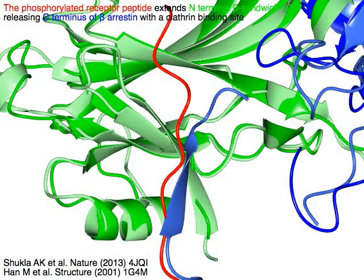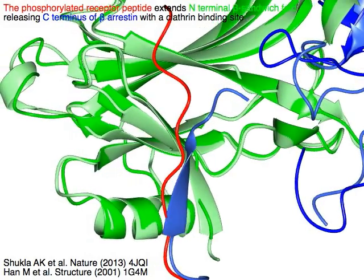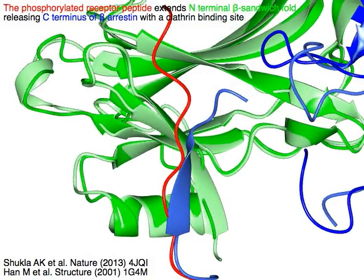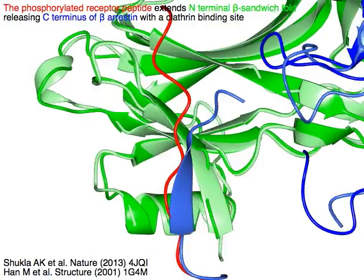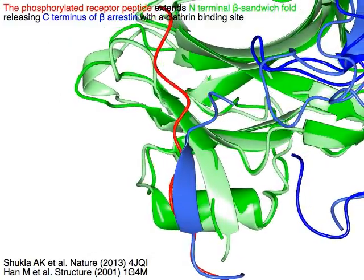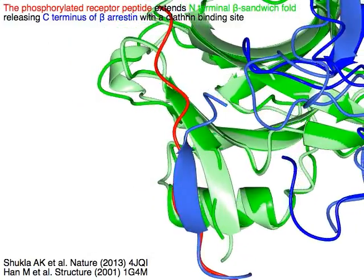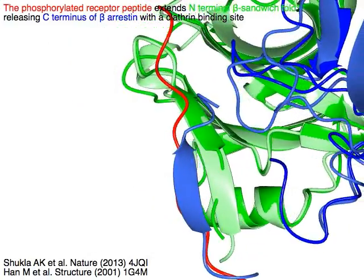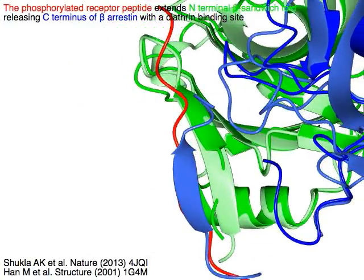The phosphorylated receptor peptide in red extends N-terminal beta-strands which fold in green, releasing the C-terminus of beta-arrestin in blue, with a clathrin binding site.